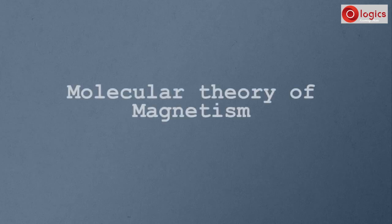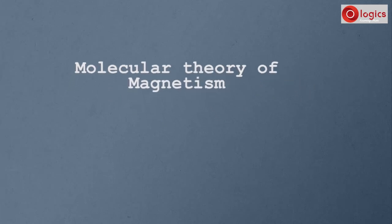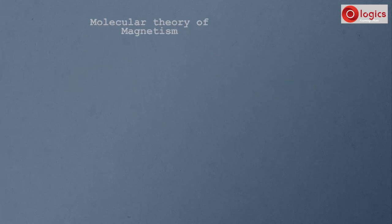Let's understand the molecular theory of magnetism. This theory explains what particles a magnetic material is made up of, and how these particles are aligned inside a magnet and other materials.